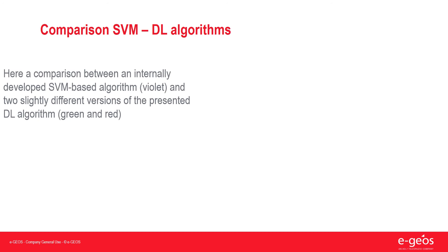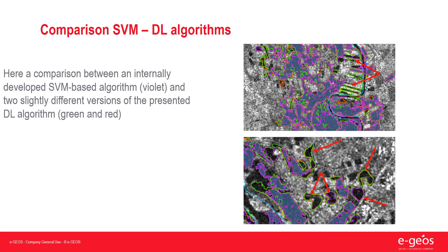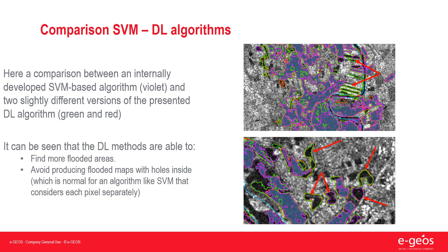Here is a comparison between an internally developed SWM-based algorithm, shown in violet, and two slightly different versions of the presented deep learning algorithm, in green and red. It's possible to see that deep learning methods are able to find more flooded areas, as visible in the top image with the thick pieces of water. Deep learning methods are also able to avoid producing flood maps with holes inside, which is normal for an algorithm like SWM because SWM considers each pixel separately.